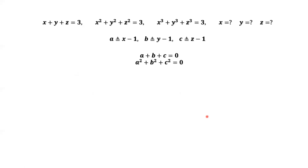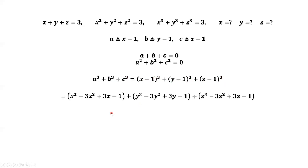Now we want to check A to the power 3 plus B to the power 3 plus C to the power 3, which equals (x minus 1) to the power 3 plus (y minus 1) to the power 3 plus (z minus 1) to the power 3. Simplifying the right-hand side, we have x to the power 3 minus 3x squared plus 3x minus 1, plus y to the power 3 minus 3y squared plus 3y minus 1, plus z to the power 3 minus 3z squared plus 3z minus 1.